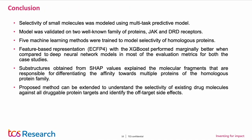In conclusion, the selectivity of homologous target proteins was addressed using a multi-task prediction model, and the model was validated on two well-known family of proteins: Janus kinase and dopamine receptors. We found that ECFP4 with XGBoost to be the best performing model on these datasets, and the proposed method can be extended to understand the selectivity of existing drug molecules against all druggable targets and identify off-target side effects.